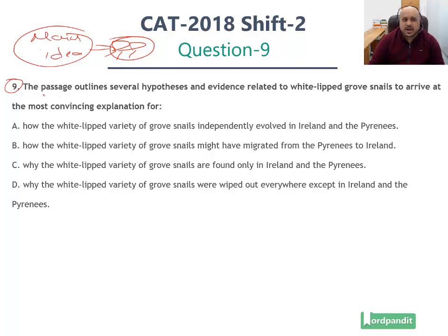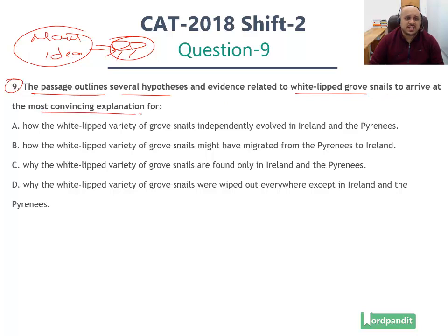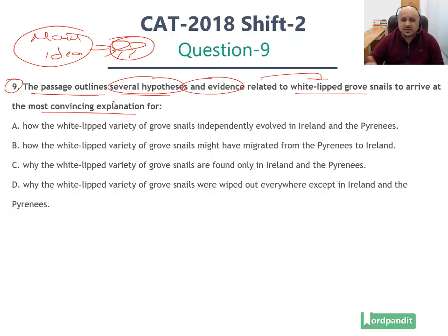The question asks you — it probes from you — the passage outlines several hypotheses and evidence related to white-lipped groove snails to arrive at the most convincing explanation for. So the author has given us several hypotheses and evidence related to white-lipped groove snails. Why has he done so? What is it that he is trying to prove or arrive at?